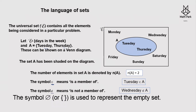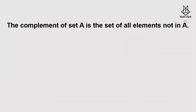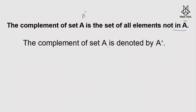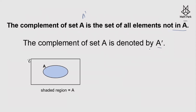The symbol phi, or empty brackets, is used to represent an empty set, which we also call a null set. The complement of set A, denoted by A dash (A'), is the set of all elements which are not in A.